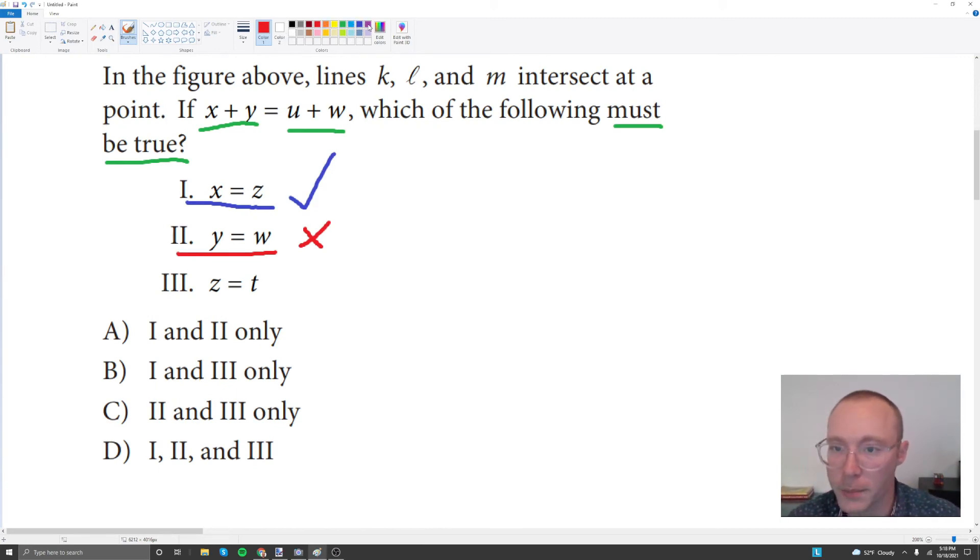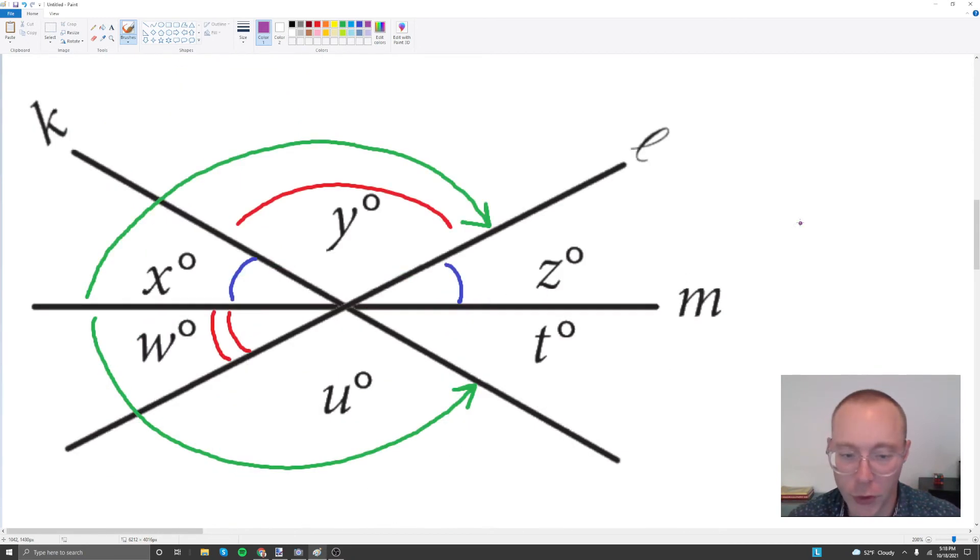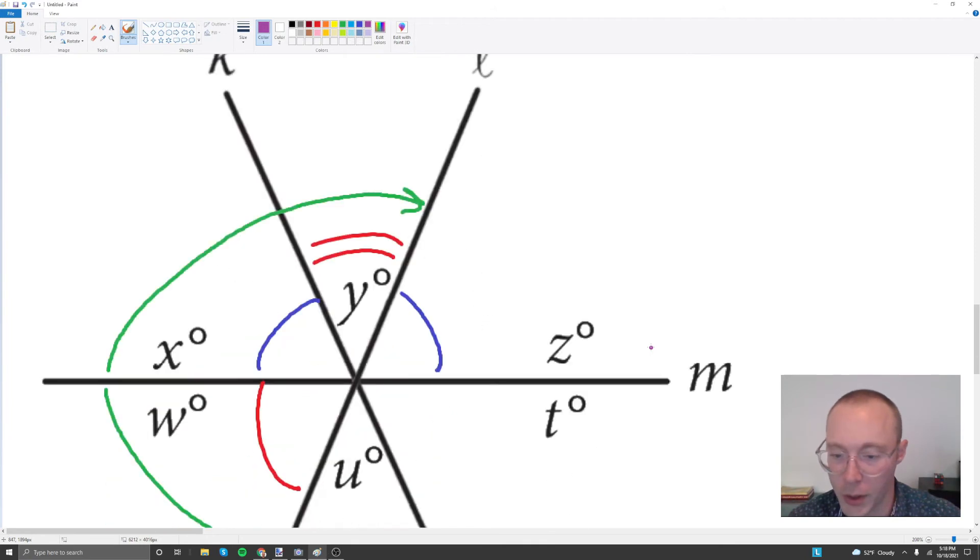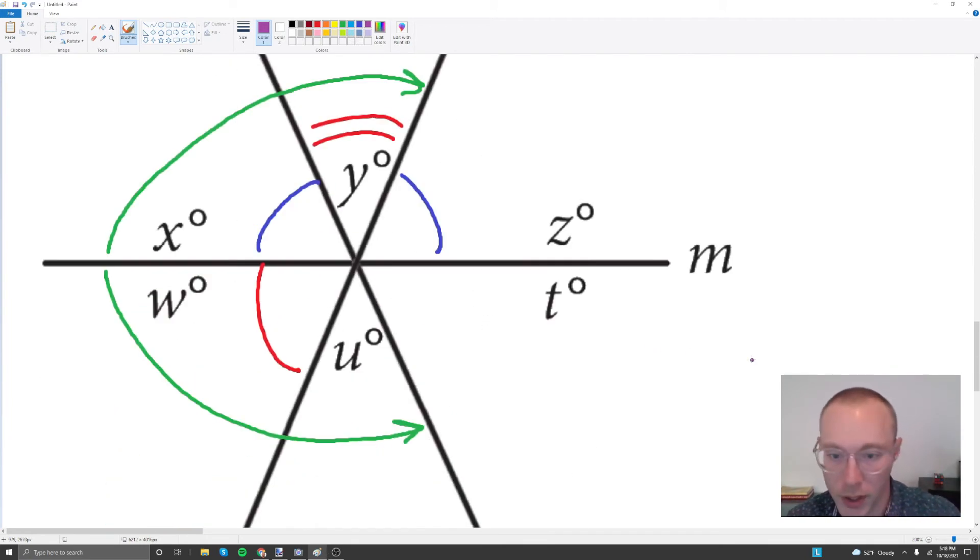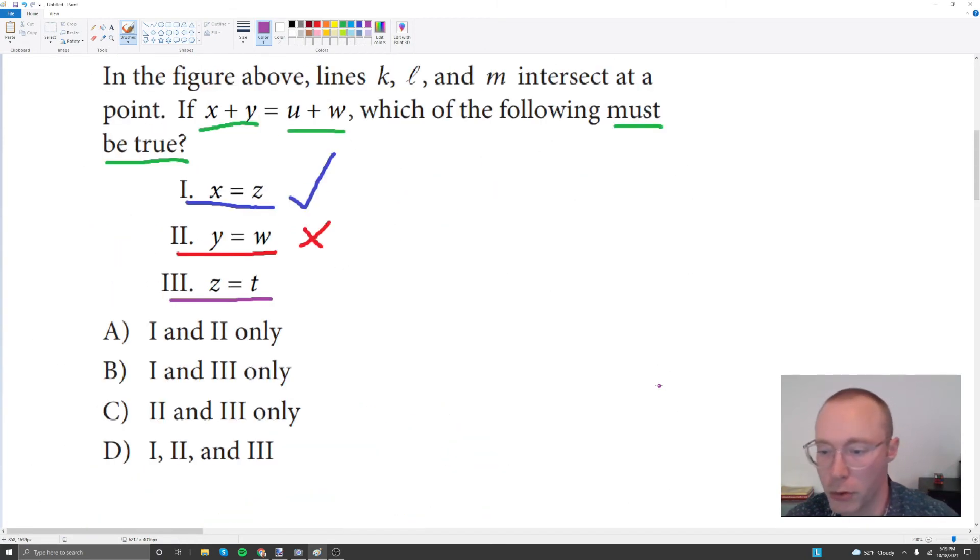And let's do the last one here. I'll use purple for Roman numeral three. Angle z equals angle t. If we look in our first alternative drawing, we see that angle z and angle t do appear to be congruent. And if we look at our second drawing, angle z and angle t, again, appear to be congruent. And that means that angle z must always be congruent to angle t. And so we can check that one off. What we just figured out was that Roman numerals one and three must be true. And that's going to give us choice B. And that's pretty much the problem.